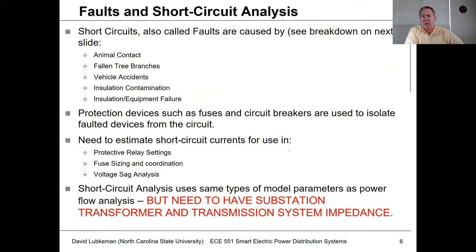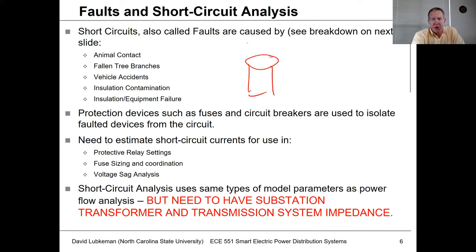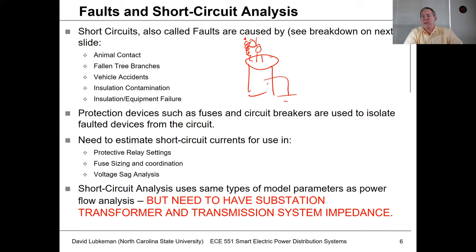I use the terms short circuit and fault interchangeably; faults are generally what utility people call these events. They can be caused by a variety of things. Animal contact is actually one major cause. For instance, a transformer has a bushing which is the hot conductor, while the transformer casing is grounded. If an animal touches the bushing while sitting on the grounded transformer tank, it forms a path to ground, gets electrocuted, and causes a short circuit that may result in an outage.